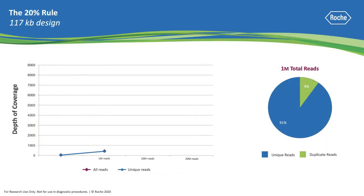Sequencing an NGS library is a sampling operation. Very complex libraries or low-pass sequencing will yield low duplicate rates. Low-complexity libraries and/or over-sequencing or over-sampling will yield high duplicate rates. Increasing amounts of sequence will yield diminishing returns.